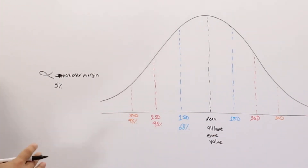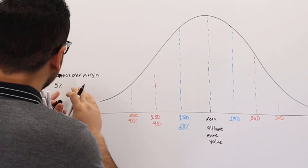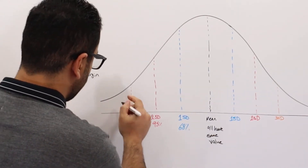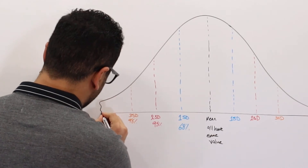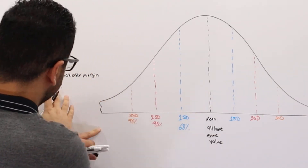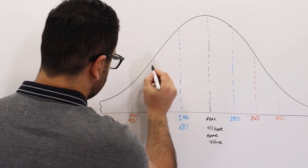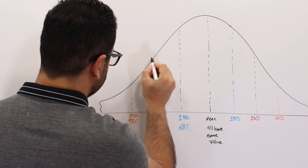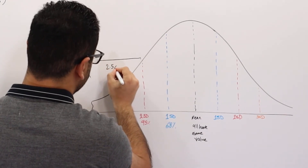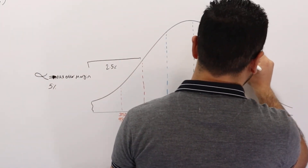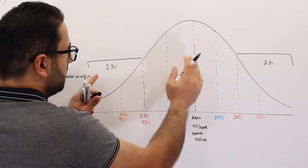The tails of this curve represent alpha. If we say 5% is allowed, then 95% is covered. From the second standard deviation out to the far end on one side is 2.5%, and from the second standard deviation out to the far end on the other side is another 2.5%, giving us the total 5% alpha. Some researchers can set it to 1% instead.